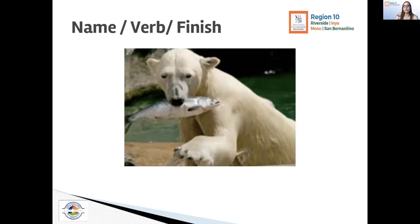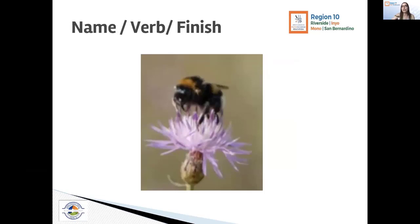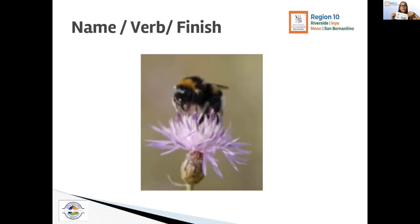I'd like you to try name it, verb it, finish it with this image. Type into the chat: name it, what's it doing, and then finish that off with some of the things you see. You could start with 'I see,' or you could start with the actual animal or creature. You have different options for how you'd like to write today.